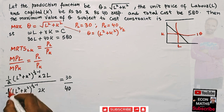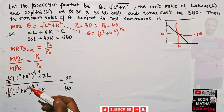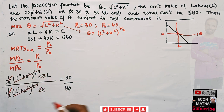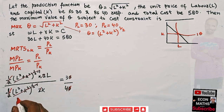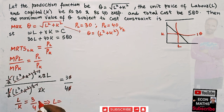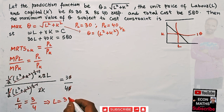After cancellation, the (1/2) terms cancel, the (l² + k²)^(-1/2) terms cancel, and the 2's cancel, leaving l/k = 3/4, which means l = (3/4)k.